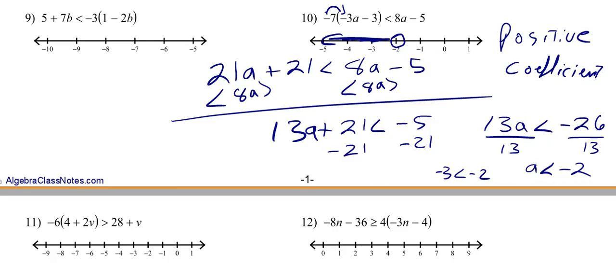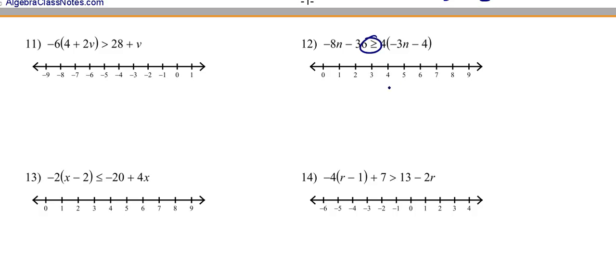I'm not going to work any more examples, but like 12 here, that's a closed dot. Problem 13 is a closed dot. And there are closed dots because they've got this little bar here. Because it's less than or equal to or greater than or equal to.